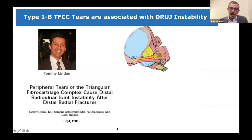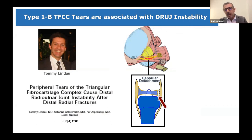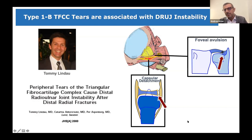The same results were reached by a series from the Mayo Clinic comparing open and arthroscopic repair of the TFCC, showing that 70% of patients showed DRUJ instability requiring re-operation. The conclusion was that it was very common to underestimate DRUJ instability or to provide inadequate TFCC repair. Before those papers, Tommy Lim Dao was the first to describe that peripheral tears were strongly associated with DRUJ instability.